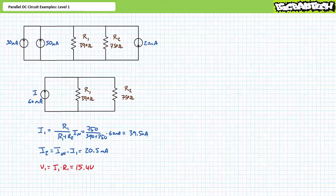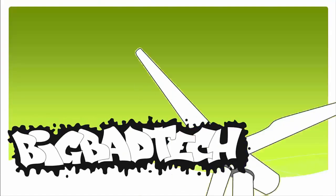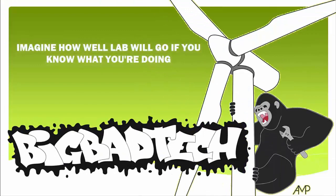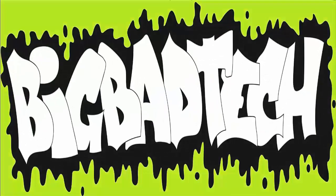That's it. In conclusion, this lecture examined several illustrated examples of parallel DC circuit analysis. Remember to review these concepts as often as you need to really drive it home — imagine how well lab will go if you know what you're doing. Thank you very much for your attention and interest, and we'll see you again during the next lecture of our series. Remember to tell your lab partner about this resource, and be sure to check out the Big Bad Tech channel for additional resources and updates.